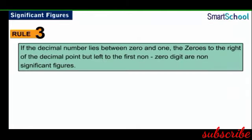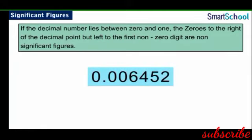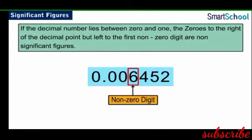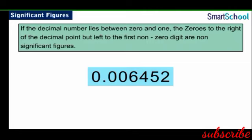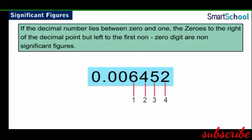The third rule says that if a decimal number lies between 0 and 1, the zeros to the right of the decimal point but left of the first non-zero digit are non-significant figures. For example, in 0.006452, there are two zeros between the decimal point and the first non-zero digit 6. These zeros are non-significant. Hence, the significant figures are 6, 4, 5, and 2, giving a total of 4 significant figures.